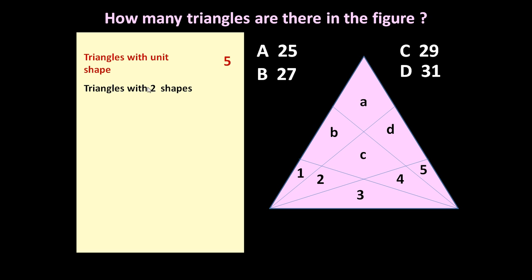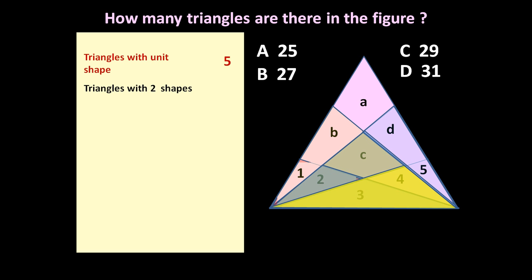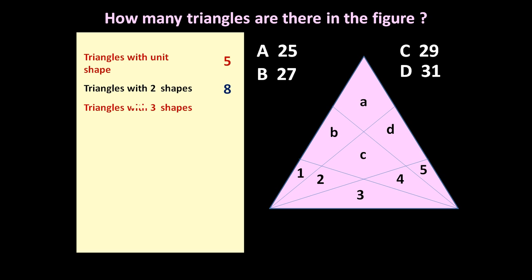Triangles with unit shape: five. Now let us count triangles which can be formed using two shapes. These two shapes may be two triangles or any combination. So let us count: one, two, three, four, five, six, seven, eight. Friends, eight triangles can be formed using two shapes.